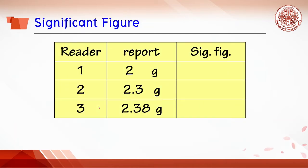The total number of exact digits and uncertain digits is called significant figures. From this table, the readers record different significant figures of 1, 2, and 3, where the numbers 2, 3, and 8 are the uncertain digits.